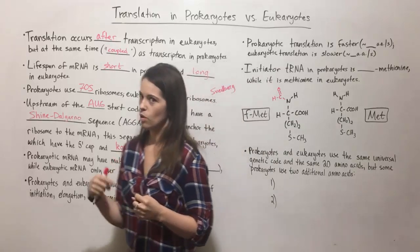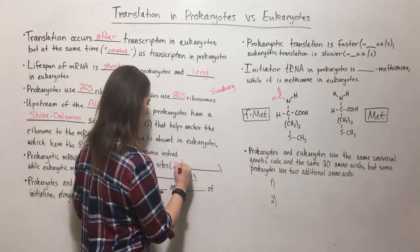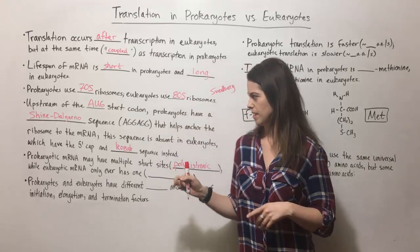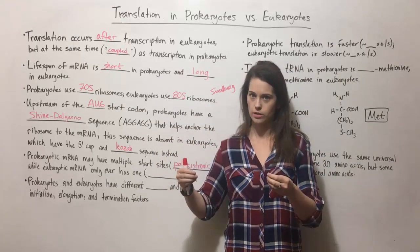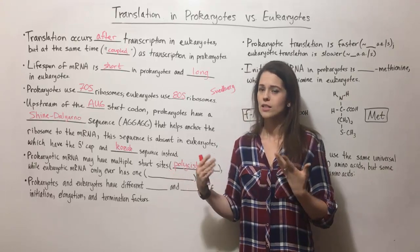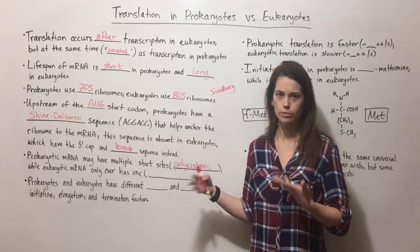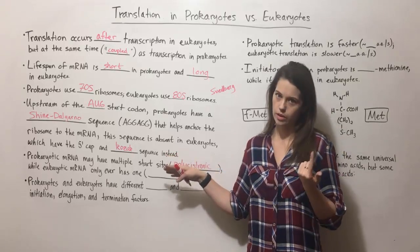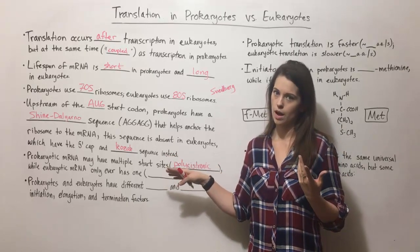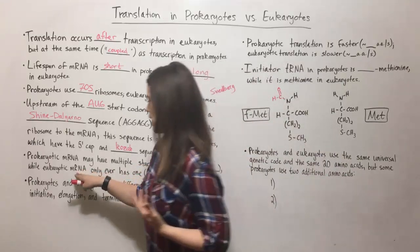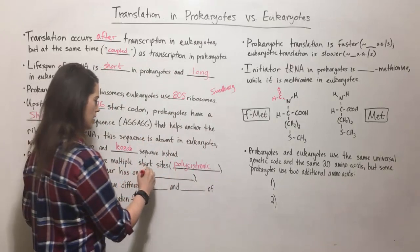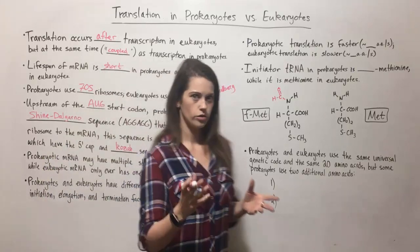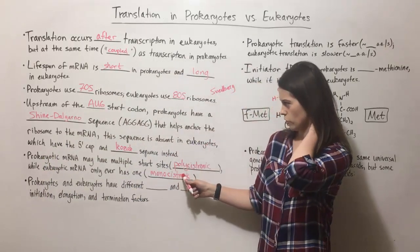Prokaryotic mRNA also can have multiple start sites — this is called polycistronic. Polycistronic means that multiple genes can be on one mRNA transcript, encoding multiple polypeptides or proteins. So prokaryotic mRNA may code for only one protein, but it can also have many. Whereas eukaryotic mRNA only ever has one, and that is called monocistronic — one transcript results in one polypeptide, and that's always true for eukaryotic mRNA.